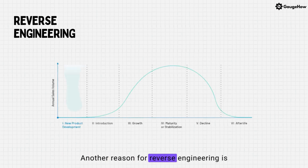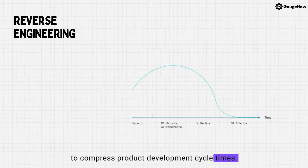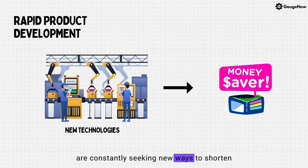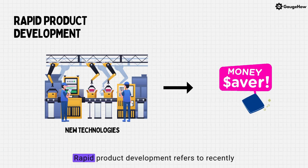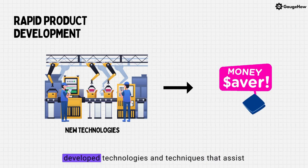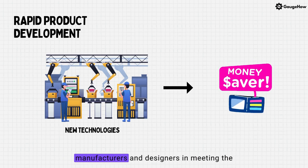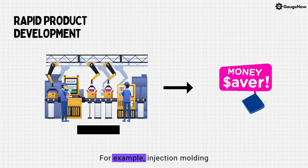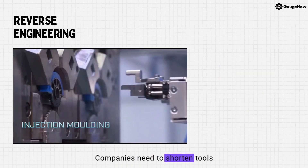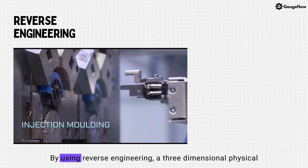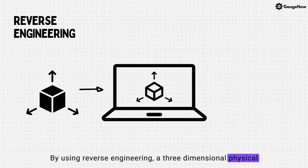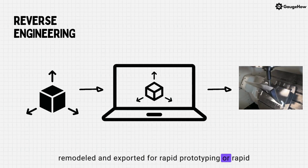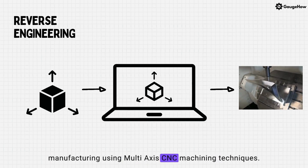Another reason for reverse engineering is to compress product development cycle times. In the intensely competitive global market, manufacturers are constantly seeking new ways to shorten lead times to market a new product. Rapid product development refers to recently developed technologies and techniques that assist manufacturers and designers in meeting the demands of shortened product development time. For example, injection molding companies need to shorten tool and die development time drastically. By using reverse engineering, a three-dimensional physical product can be quickly captured in digital form, remodeled and exported for rapid prototyping or rapid manufacturing using multi-axis CNC machining techniques.